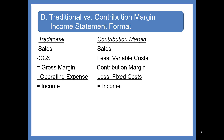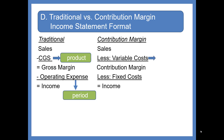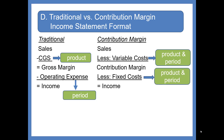Here are your two income statement formats. The traditional format, used in financial reporting, is Sales minus Cost of Goods Sold giving you Gross Margin, minus Operating Expenses giving you Income — this is the Product/Period format. The Contribution Margin Income Statement takes Sales minus Variable Costs (which could be Product or Period Costs) to give Contribution Margin, then subtracts Fixed Costs (Product or Period) to give Income — this is the Variable/Fixed format and it emphasizes cost behavior.